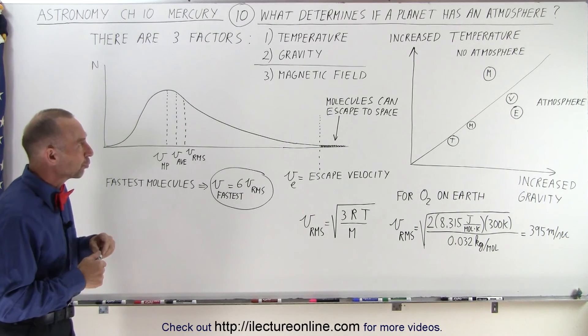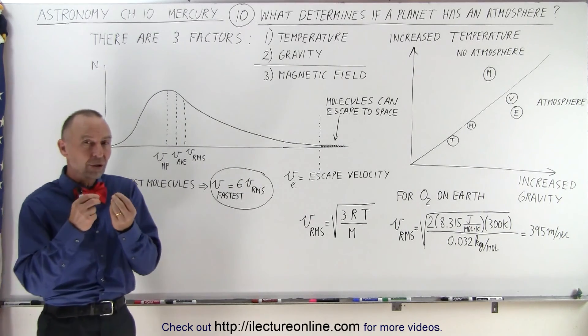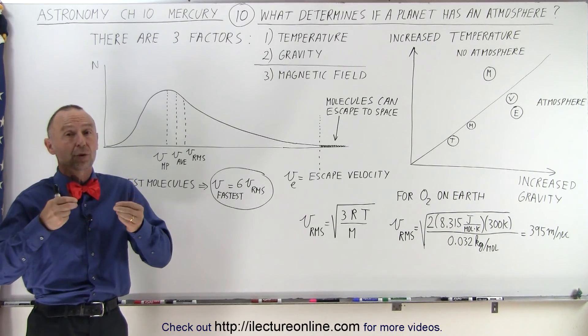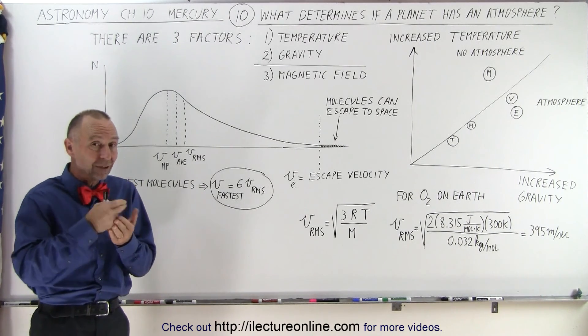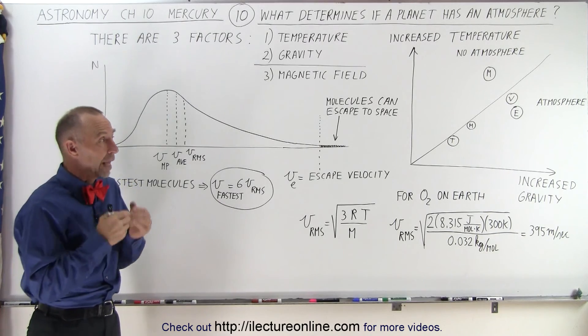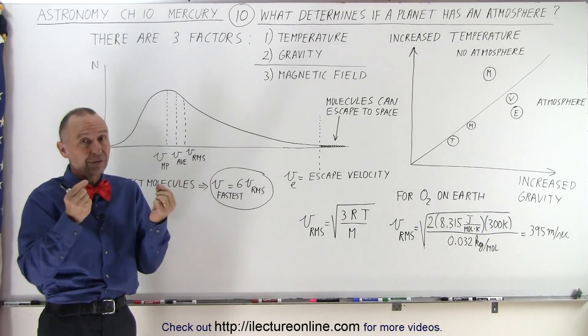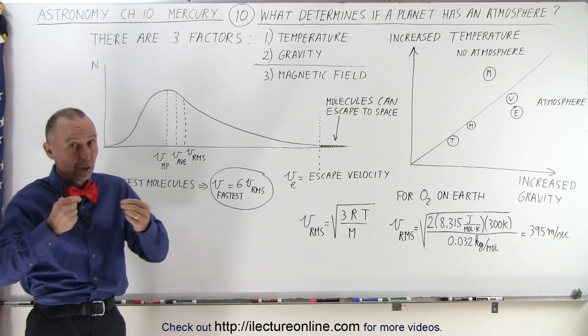But let's take a look at the first two factors. Because temperature affects the speed at which the molecules in the atmosphere will move. The hotter it gets, the faster they move. Now, a planet which is closer to the sun will be warmer, and therefore the molecules in the atmosphere will move faster.